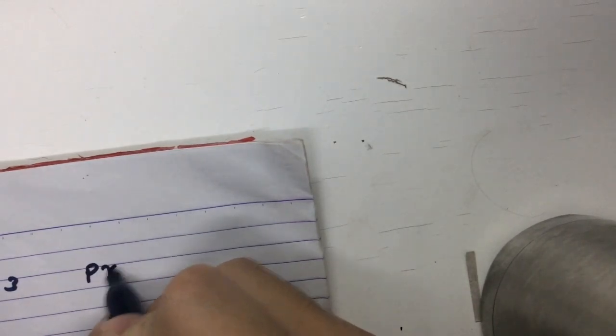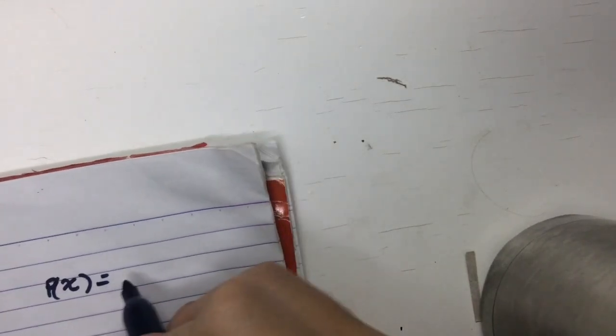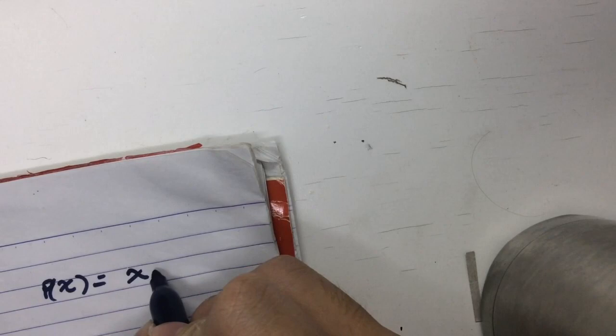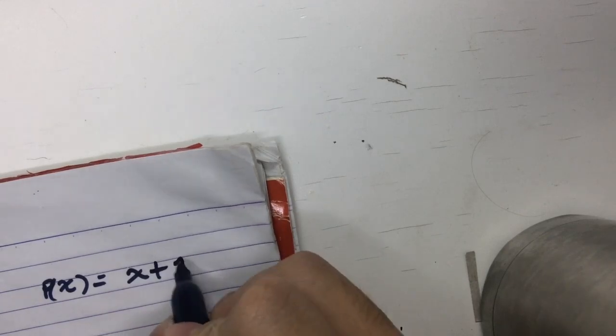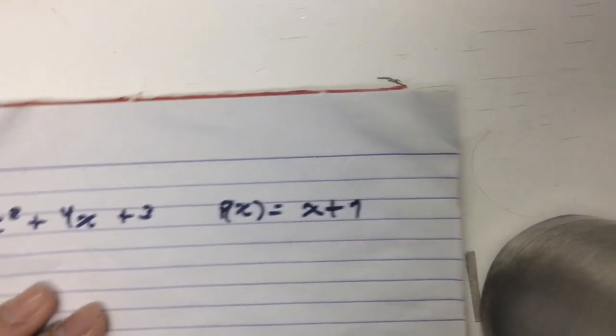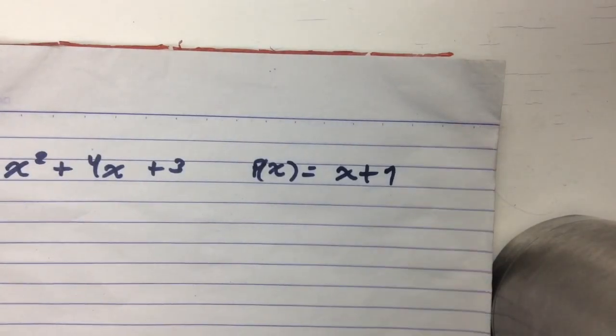Let's say we're going to divide that function by another function which is p(x) equals x plus 1. So how do we divide these two polynomials?